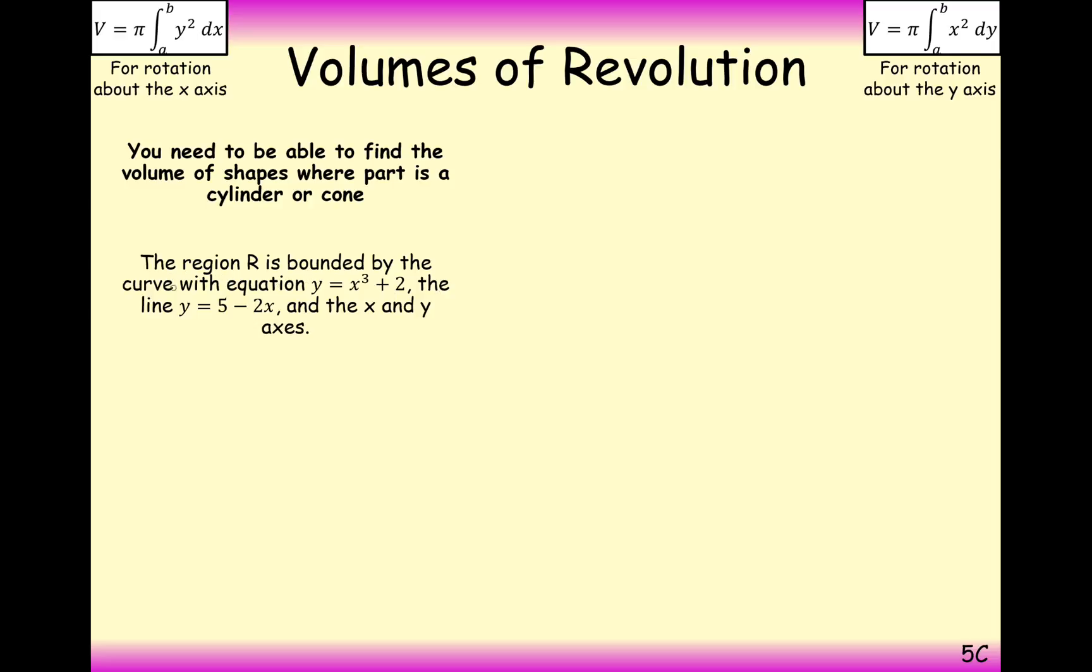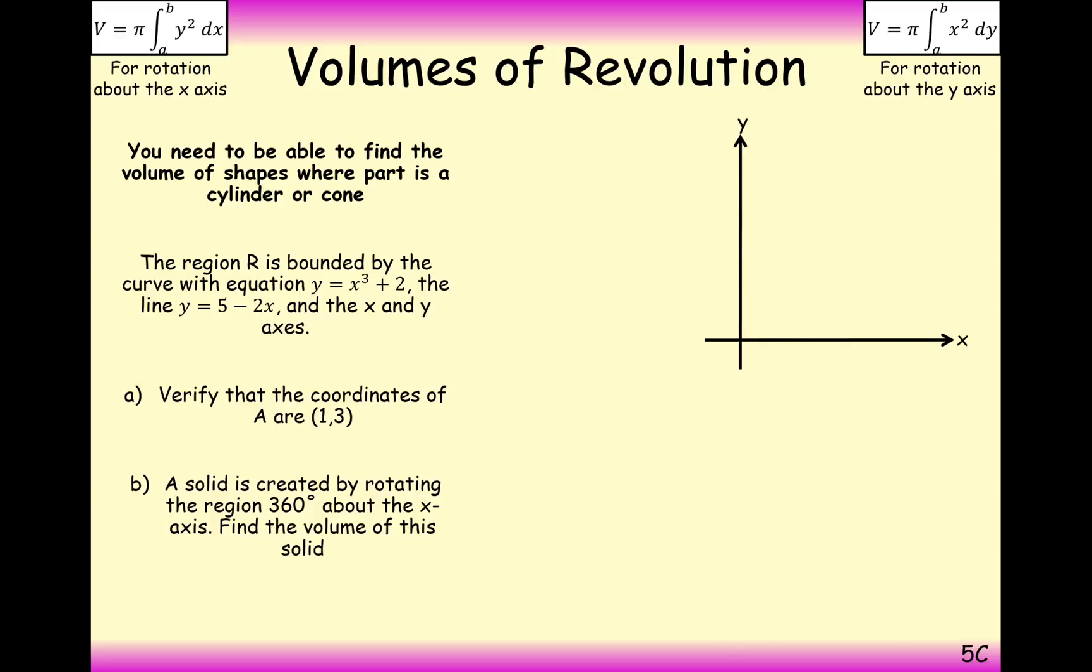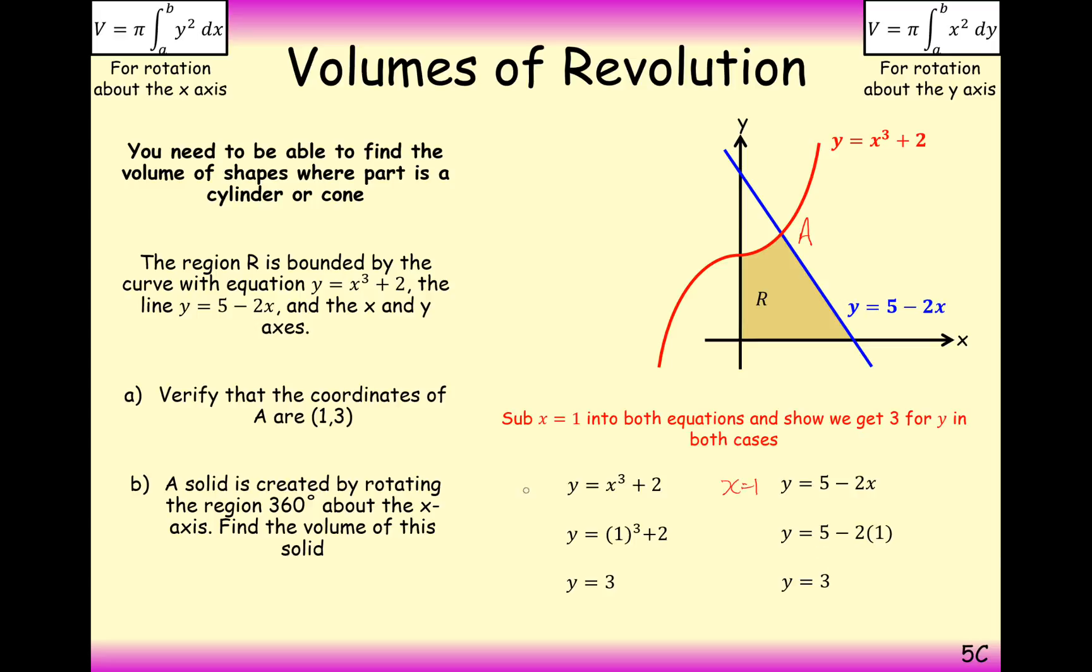In this first question here, we see that the region r is bounded by the equation y equals x cubed plus 2, which looks a little bit like the x-cubed graph shifted up by 2, and 5 minus 2x. Part a is verify that the coordinates of a are (1, 3). Well, the coordinate a is where the two points will intersect. So, all we have to do is substitute in 1 into each of the equations, and then hopefully 3 comes out the other end. So, substituting in 1 into the first equation, we get 3. Substituting 1 into the second equation, we get 3 as well. Great. So, we have verified there that when you substitute in x equals 1, you get y equals 3 on both graphs, so they clearly intersect that point.